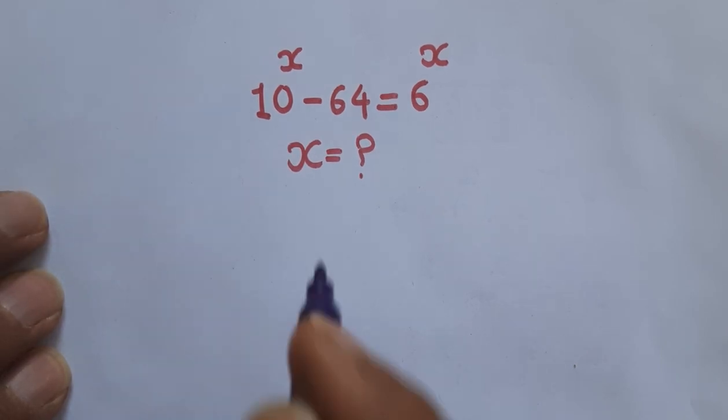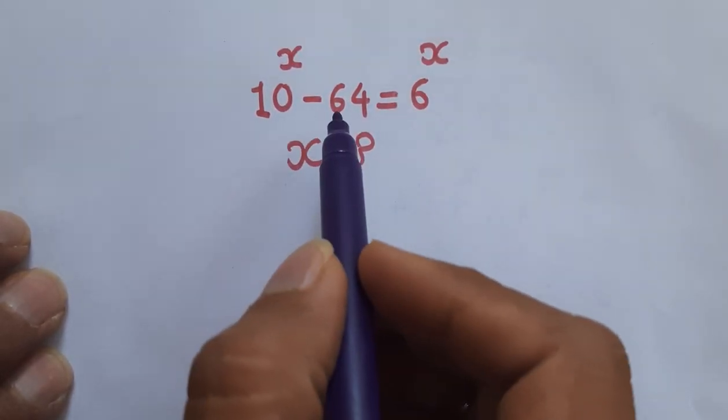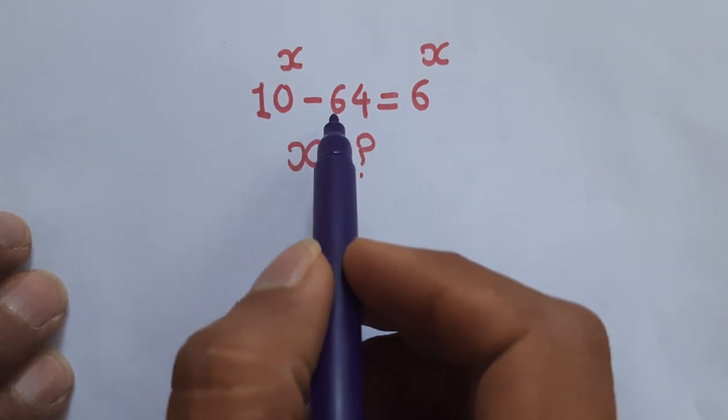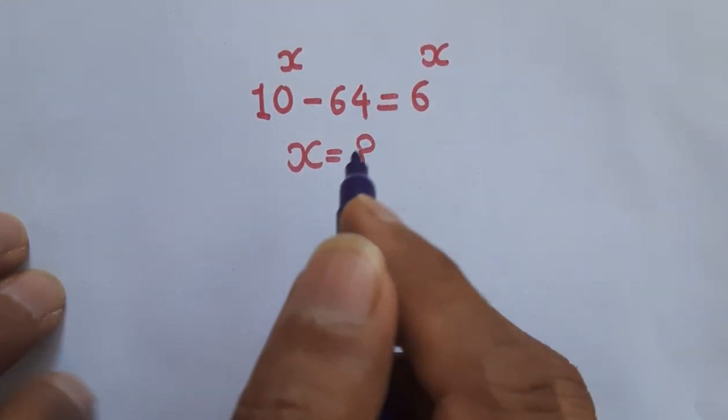Hello friends, welcome. Let's try to solve this problem. Given is 10 power x minus 64 is equal to 6 power x. So what is the value of x?